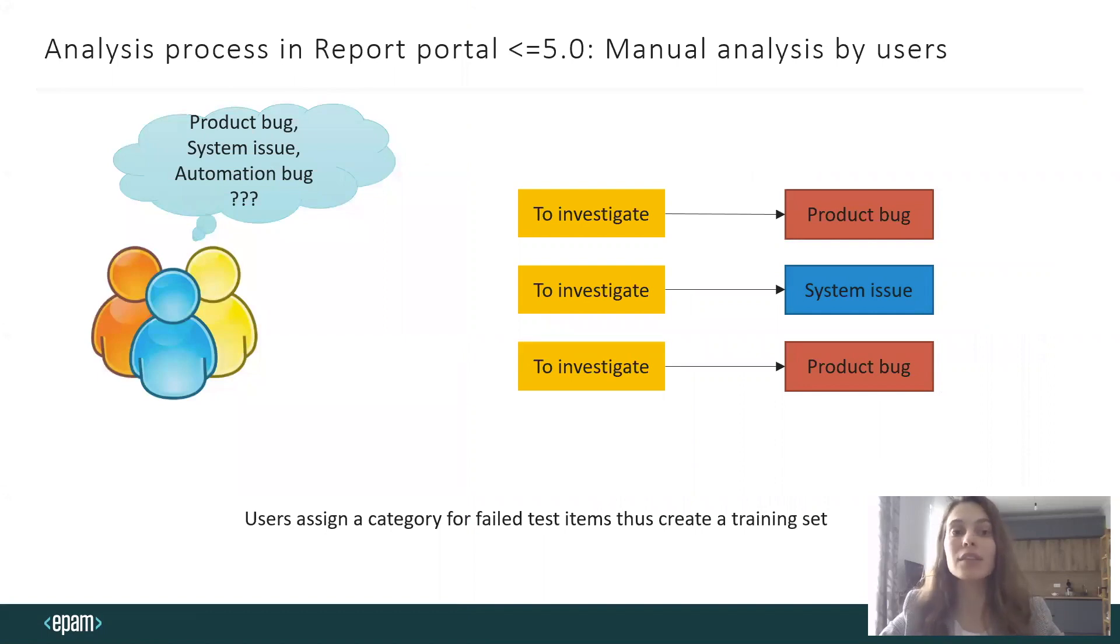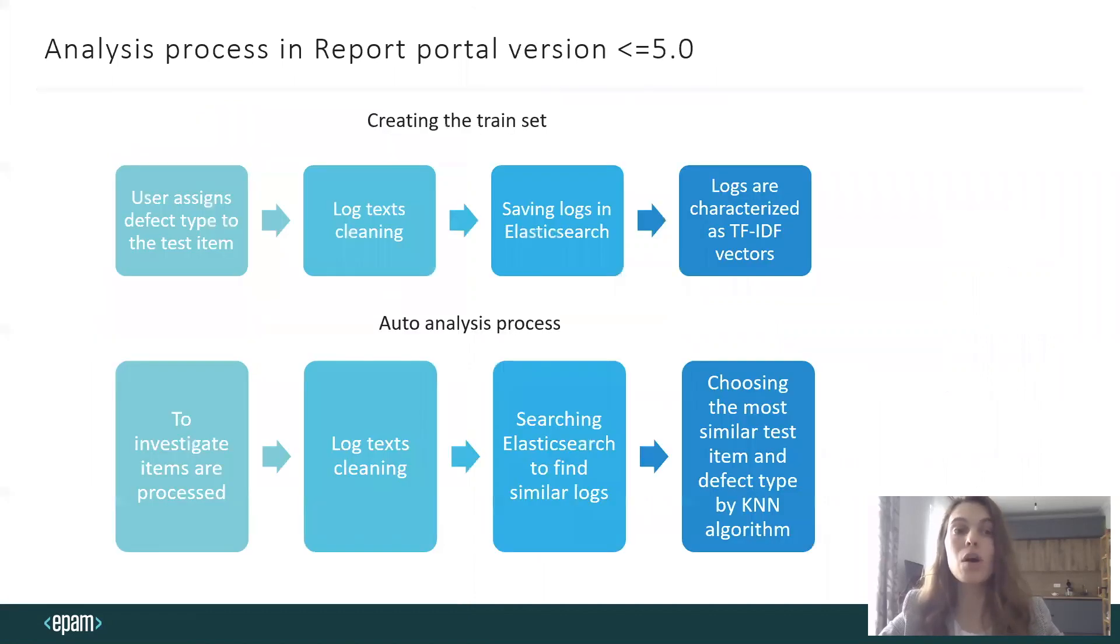At first, I would like to remind you the details of the analysis process in Report Portal below 5.0. Our analysis strongly depends on user assignments of defect types, as it represents the training set and source of knowledge for future failed test items. The whole process can be divided into two parts: creating the training set and the auto-analysis process.